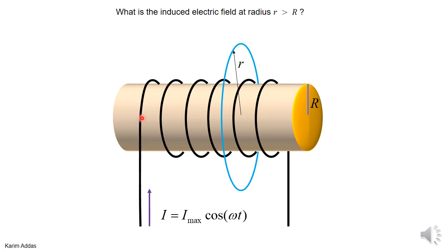You have a current in this wire, and the current is not constant — it's actually changing with time. It's I_max times cosine(ωt). I_max is just a constant, but the cosine(ωt) makes the current change with time. Sometimes the current is positive, meaning it's going one way; sometimes it's negative, going the other way. So the current keeps on oscillating with time. We define some radius r, and this blue line just indicates a circle — it doesn't mean there's any wire there. It could be just empty space.